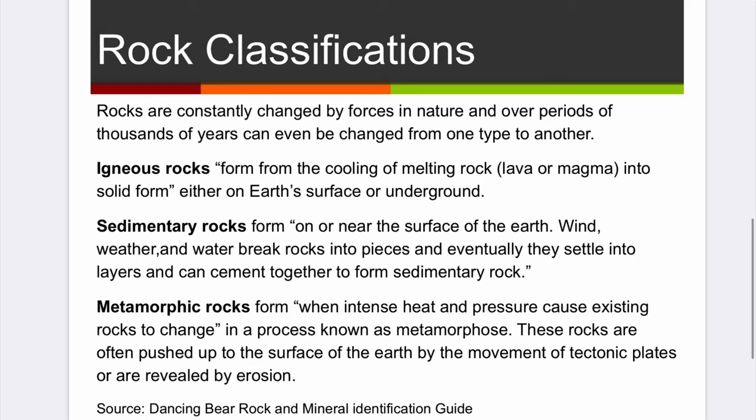Now for some more information on these three classifications. Rocks are constantly changed by forces in nature and over periods of thousands of years can even be changed from one type to another. Igneous rocks form from the cooling of melting rock — either lava or magma — into solid form, either on earth's surface or underground. Sedimentary rocks form on or near the surface of the earth.